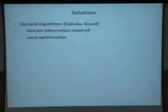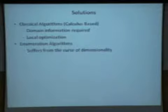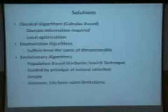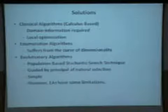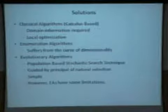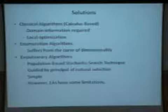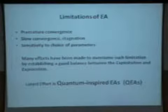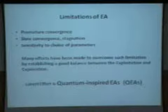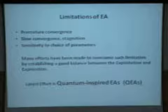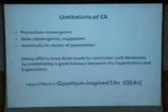The kinds of solutions attempted are classical solutions, enumeration, and evolutionary algorithms. Most successful have been the evolutionary algorithms because they at least give you some kind of solution — maybe a satisficing solution, maybe not an optimal solution. These are algorithms guided by the principle of natural selection. They are quite simple to implement, but they have limitations: premature convergence, slow convergence, and extreme sensitivity to the choice of parameters. One effort to overcome such limitations is quantum-inspired evolutionary algorithms.